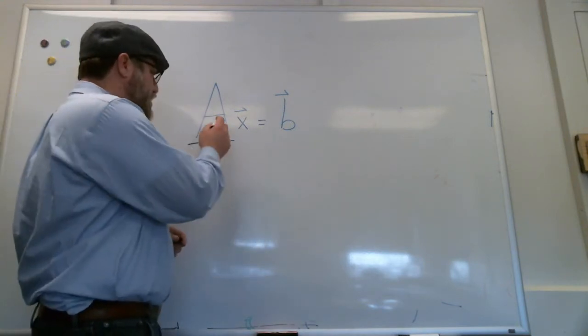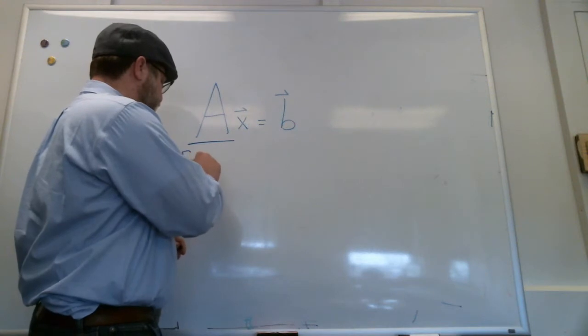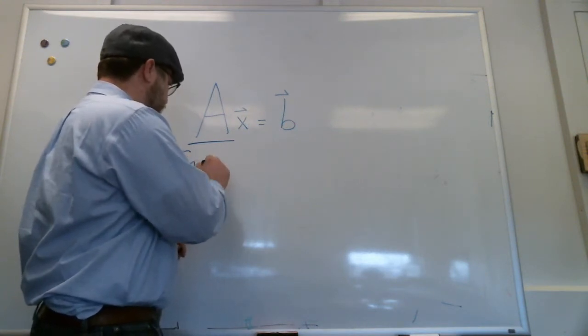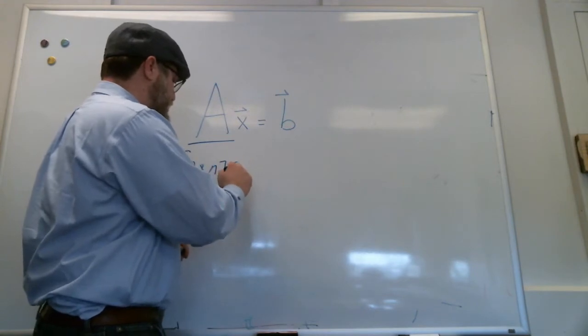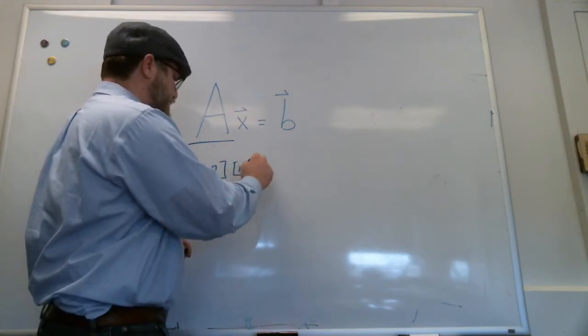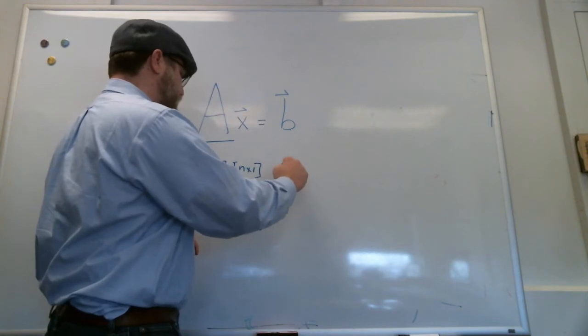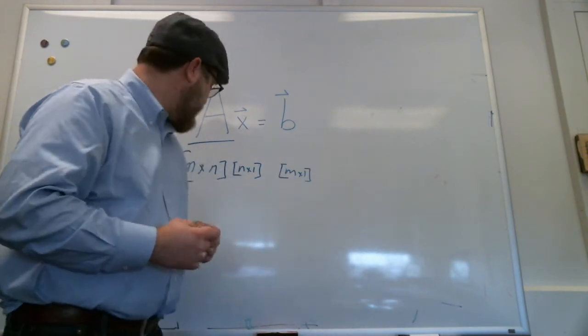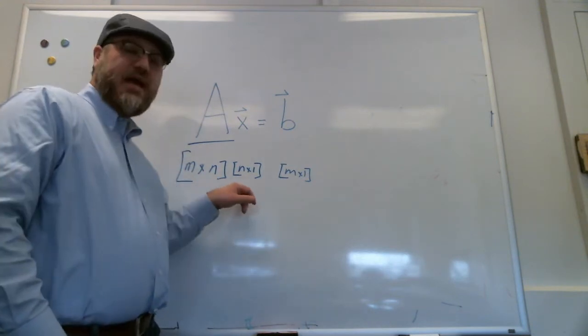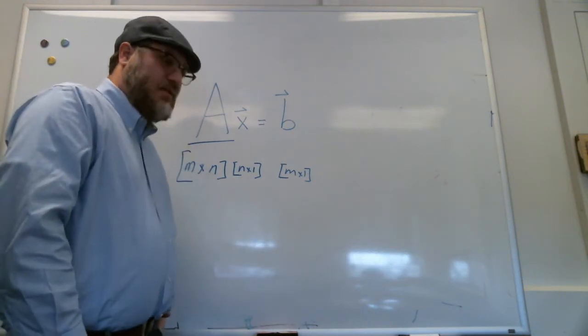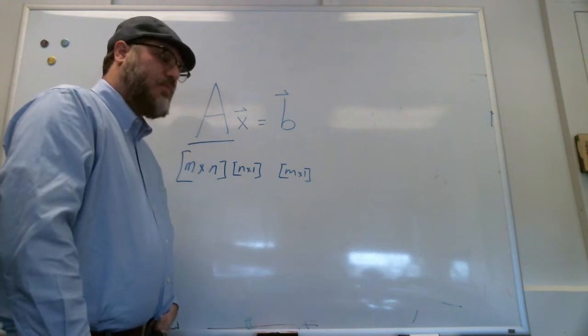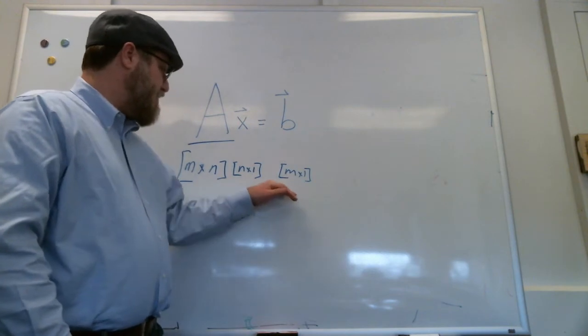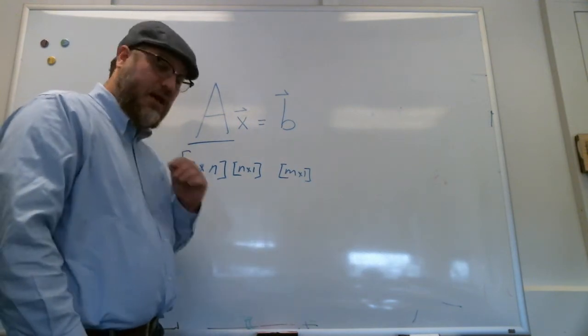Of course we know, if A is an M by N matrix, X is going to be an N by 1 vector, and B is going to be an M by 1 vector. So here we have M equations and N unknowns. But that doesn't help us understand any physical significance of what's going on here.